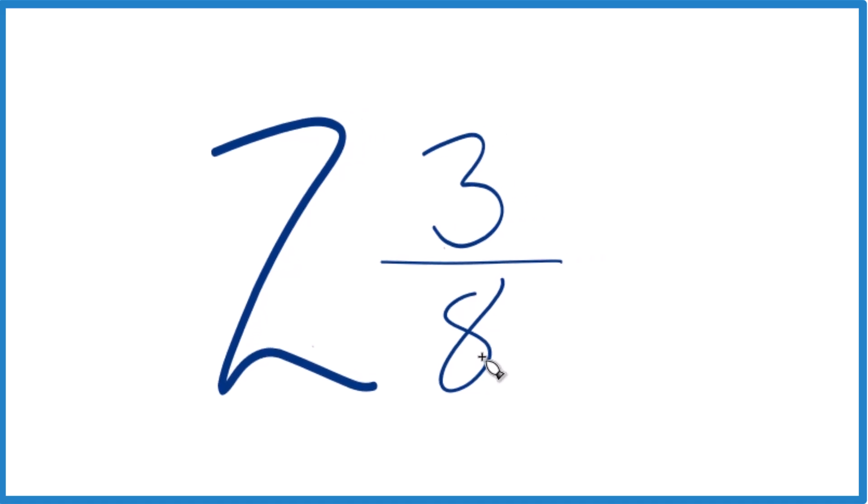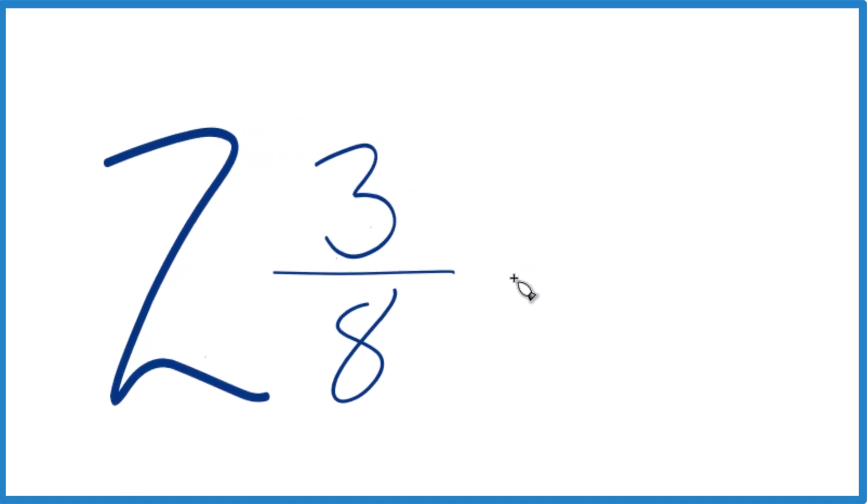2 times 8, that's 16 plus 3. So 16 plus 3, that's 19. That'll be the numerator. Then we just bring the 8 across for the denominator, and we get an improper fraction, 19 eighths.